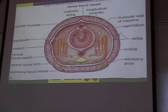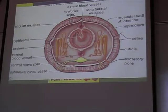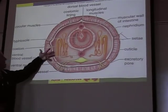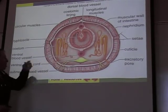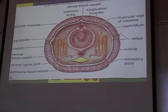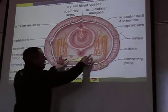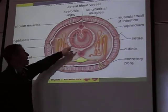Look at the blood vessels. There's the dorsal blood vessel that carries blood along the top, and there's the ventral blood vessel that carries blood along the bottom. What they're not showing is the microscopic vessels going out in each segment to deliver oxygen and food to all the cells. There's the ventral nerve cord, which runs the length of the whole body and has little nerves going out from it.